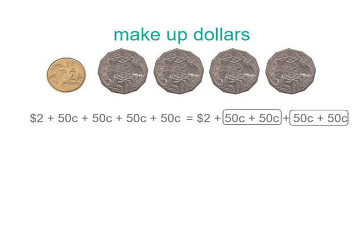Now we could also do this the other way. We could leave our two dollars and look at our fifty cents and rename those by grouping them together. I know that fifty cents plus fifty cents is one dollar, so I'm going to make two groups of that, and I've now made two dollars plus one dollar plus one dollar. So instead of renaming my two dollars to two hundred cents, I grouped my cents to make one hundred cents and then renamed each of those groups to one dollar to make four dollars. And remember, four hundred cents is the same as four dollars.